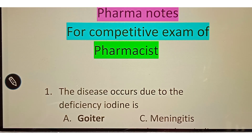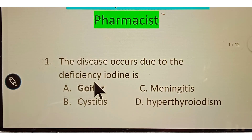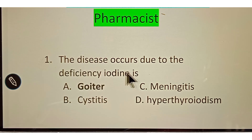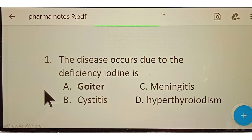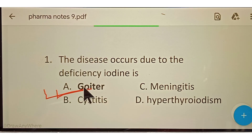Hello, welcome back to a new video on Pharma Notes. In this video I am going to discuss, for competitive exam of pharmacist, multiple choice question and answer. Question number one: the disease that occurs due to the deficiency of iodine. Options given: A. Goiter, B. Cystitis, C. Meningitis, D. Hyperthyroidism. The correct answer is option A, Goiter.